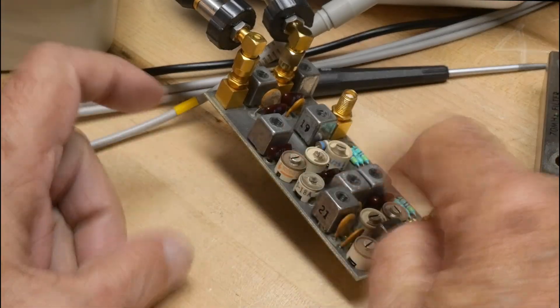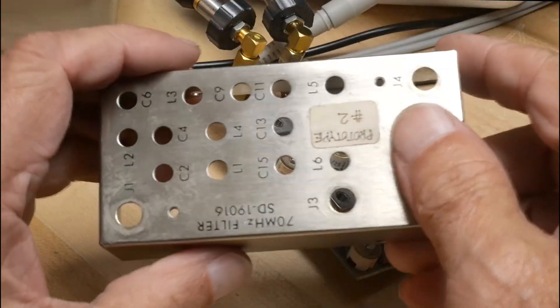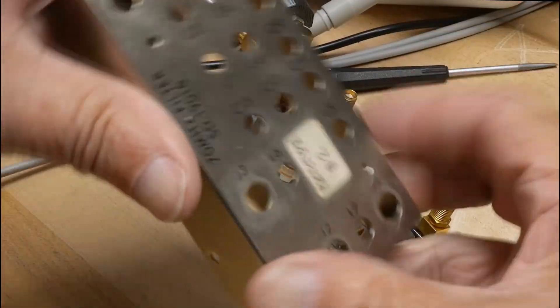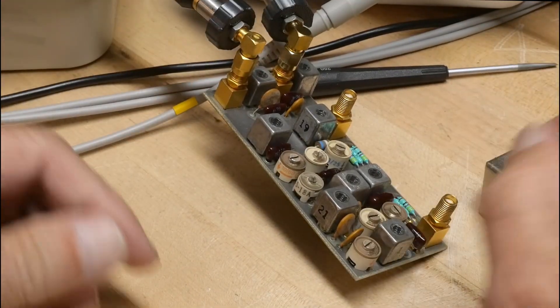All right, yesterday we looked at the 70 MHz part of this filter, but there's this little section over here that is separate on the PC board.